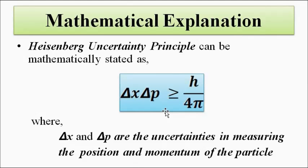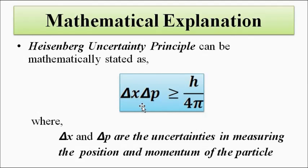If we keep delta x on one side and bring delta p to the denominator as h/4π divided by delta p, then when delta p decreases, delta x increases. So an increase in the uncertainty of momentum leads to a decrease in the uncertainty of position, and vice versa — they have an inverse relationship. We can never precisely measure both at the same time. If position is precise, momentum will not be, and if momentum is precise, position will not be.